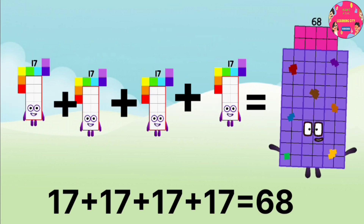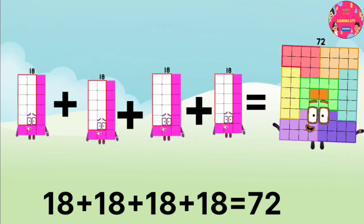17 plus 17 plus 17 plus 17 equals 68. 18 plus 18 plus 18 plus 18 equals 72.